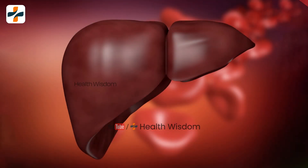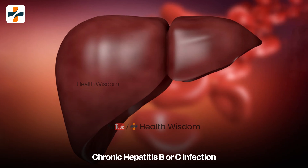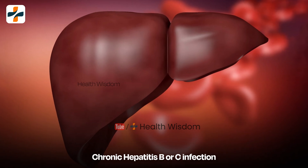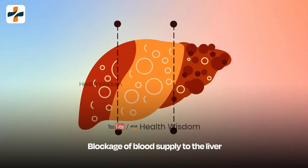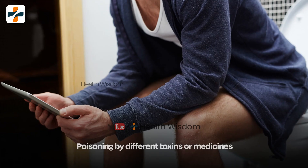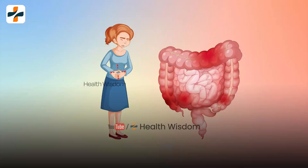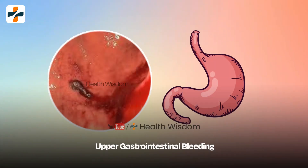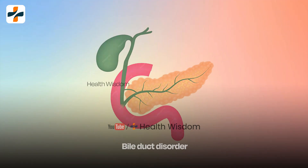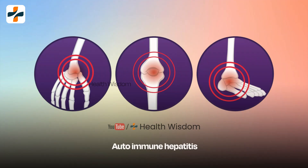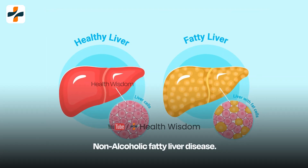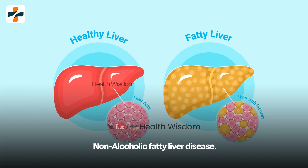Reasons for hepatic encephalopathy include chronic hepatitis B or C infection, blockage of blood supply to the liver, poisoning by different toxins or medicines, constipation, upper gastrointestinal bleeding, bile duct disorder, autoimmune hepatitis, and non-alcoholic fatty liver disease.